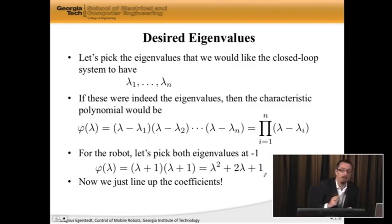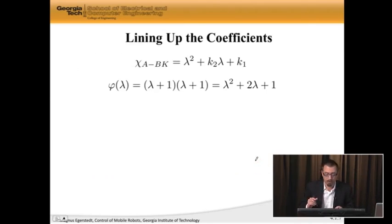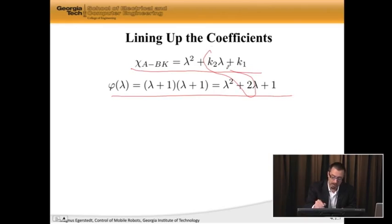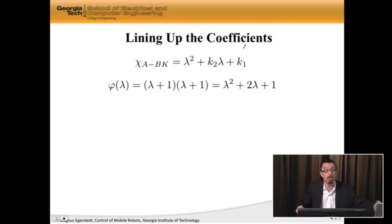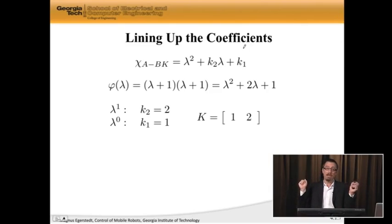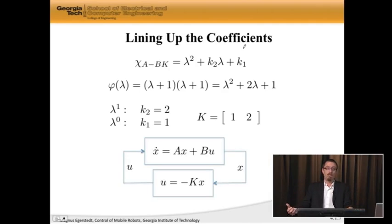Now, what we need to do is simply line up these coefficients with the actual coefficients that we have. So if I do that, I see this is the characteristic equation, this is what I would like it to look like. Here are the coefficients in front of lambda, and here are these coefficients that are hanging out by themselves. All we do now is simply line these up. So k2 has to be equal to 2, k1 has to be equal to 1, and voila, I've actually designed the K matrix that I need. So now all I do is I plug this in to my original system, which is x dot is Ax plus Bu, but I close the loop right now with u being negative Kx, and I have successfully stabilized the system by placing the eigenvalues exactly where I would like them to be.